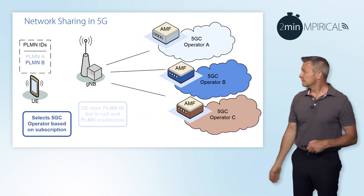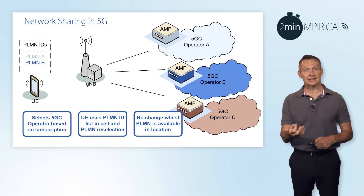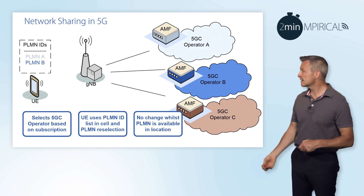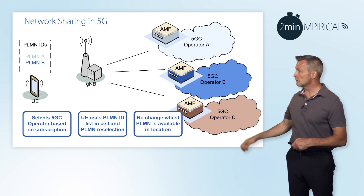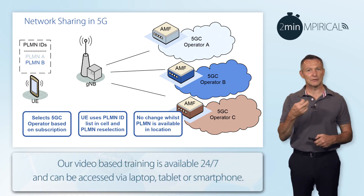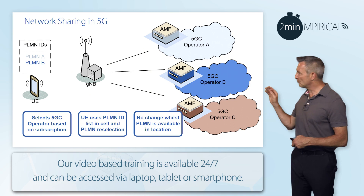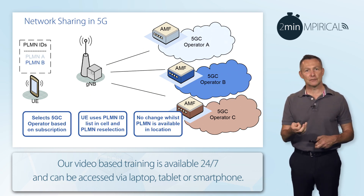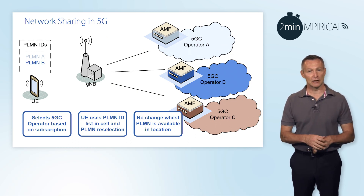In addition, the devices will utilise that PLMN identity list in order to select the appropriate 5G core operator, and it will use that in order to select the appropriate cell and also during cell reselection, so in idle mobility. One point to highlight is we will not change to a different PLMN as long as the current one is available in the location.